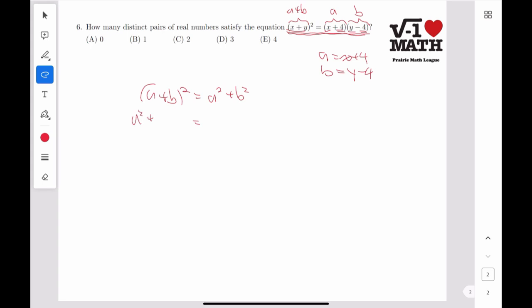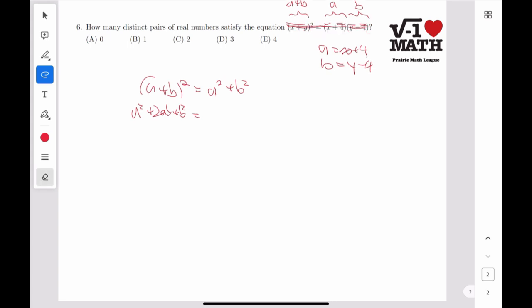which gets us a squared plus 2ab plus b squared. Oh wait, this is not, this is false. Ignore this part.